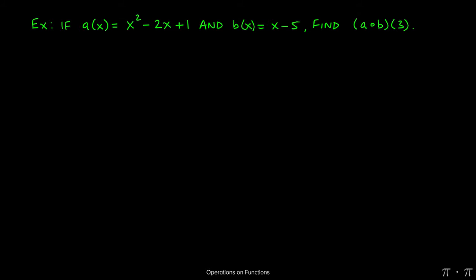Let's say we're given two functions: a(x) = x² - 2x + 1 and b(x) = x - 5. The question is asking us to find (a∘b)(3).